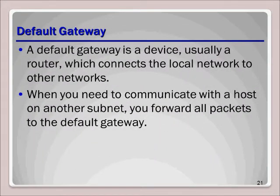The default gateway is an important concept to understand. It is the nearby router on your network that connects the local host to other networks. If a packet needs to be sent to a remote host, it will first determine that the host is on a remote network and then forward the packet to the default router or gateway. The router will then forward it to the next hop, and each router will forward the packet until it reaches its final destination.